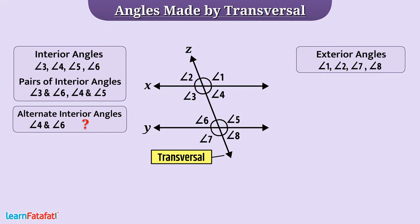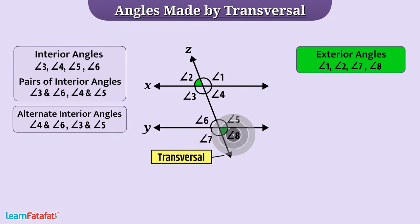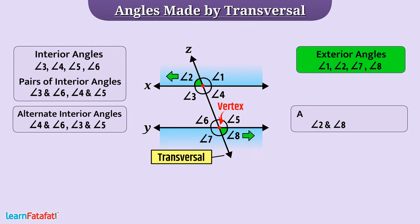Try to identify the other pair of alternate interior angles. Now, let's talk about exterior angles. Angle 2 and angle 8 have different vertices. Both are present on the outer side of the transversal as well as on opposite sides of the transversal. Such angles are called alternate exterior angles. Here, angle 1 and angle 7 are also a pair of alternate exterior angles.